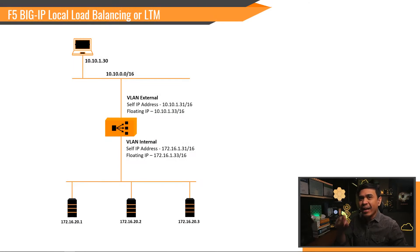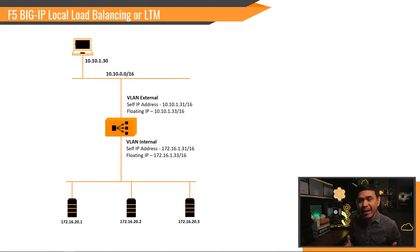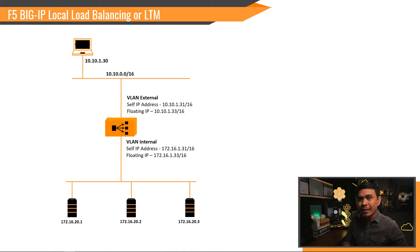Let's have a little review on F5 BIG-IP with LTM or Local Traffic Manager and how it works. LTM is the local load balancing feature of F5 BIG-IP. Here is the topology: we have an external network 10.10.0.0/16, which is connected to the client, and an internal network 172.16.0.0/16, which is connected to the servers.